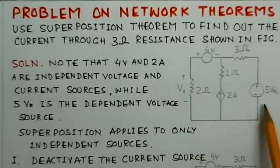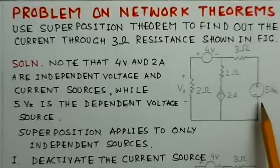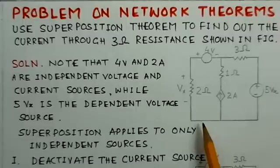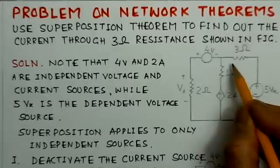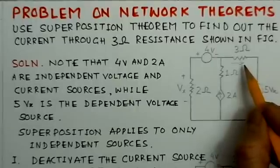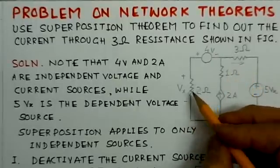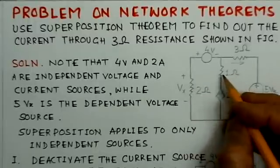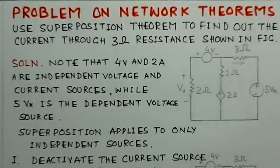We can apply superposition theorem to determine the current through this 3 ohm resistor. That current we can find by applying superposition, and that superposition is to be applied only to the independent voltage sources.